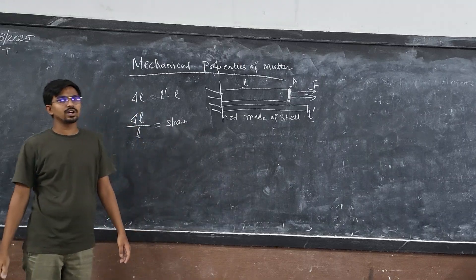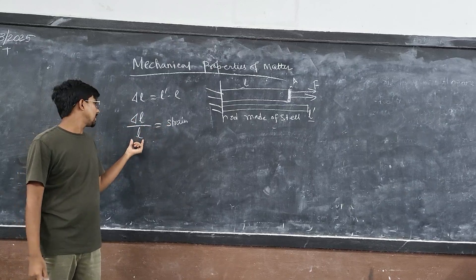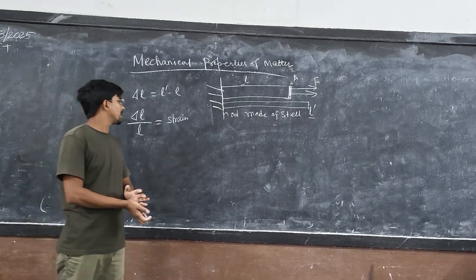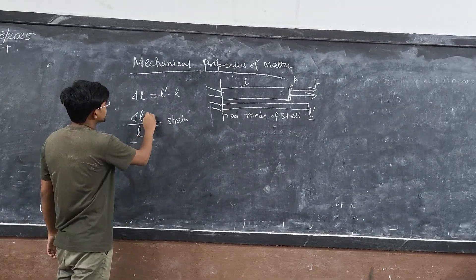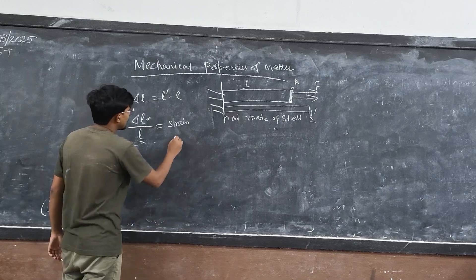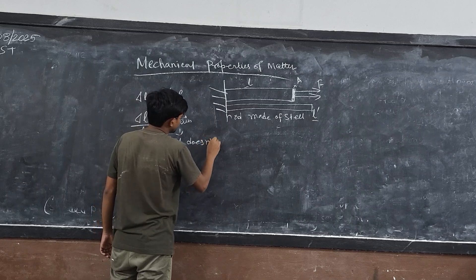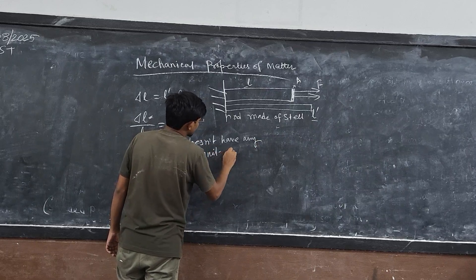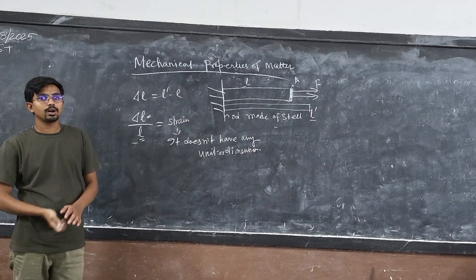So, this change in configuration divided by the original configuration, that is called strain. So, we have to calculate two things: one is stress and the other is strain. Here you can actually say that ΔL is a kind of length and L is also length. So, it is a ratio. That is why strain doesn't have any unit or dimension. So, strain doesn't have any unit or dimension.